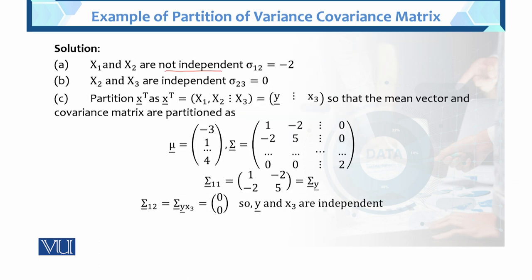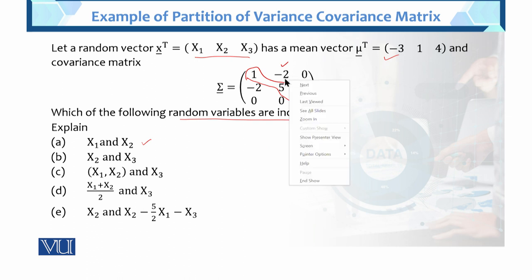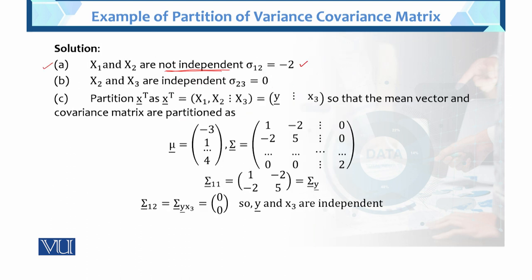Solution, part a: x1 and x2 are not independent. Why? Because the covariance sigma 1,2 has value minus 2. You know that the diagonal elements are the variances, and the off-diagonal elements are the covariances. Sigma 1,2 equals minus 2, and sigma 2,1 also equals minus 2. So the random variable x1 and x2 are not independent.